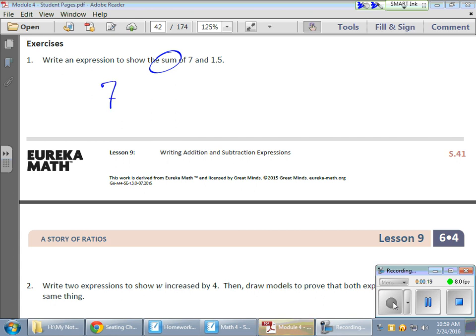So I'm going to take 7 and I'm going to add 1.5. Now we also talked about the fact that there is a commutative property of addition, so that 7 plus 1.5 may also be written as 1.5 plus 7, again because of the commutative property, so both would be equivalent.